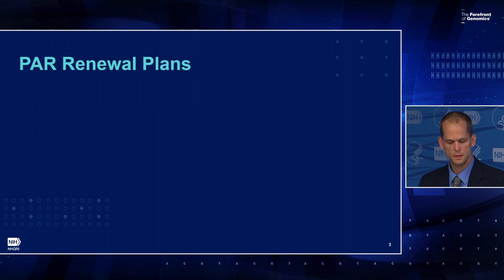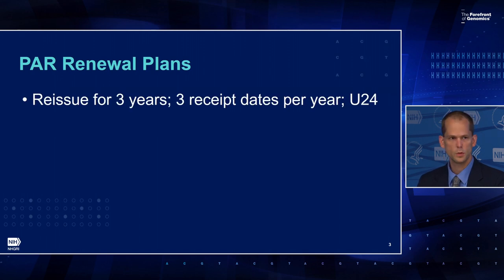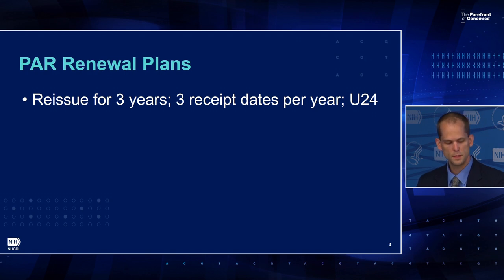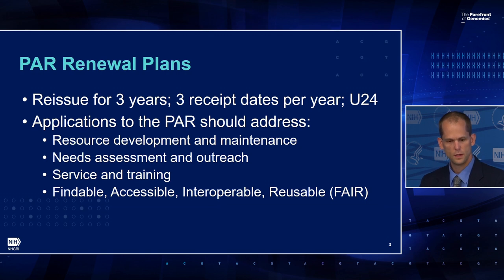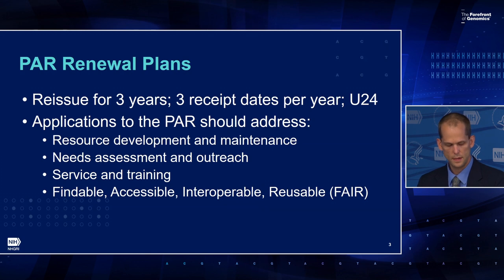To go into the concept itself, this is a renewal of an existing program announcement with special review criteria, or PAR. We are asking to reissue it for a further three years with the standard three receipt dates per year, continuing to use the U24 activity code. Applications responding to it need to address detailed plans to develop and maintain the resource in ways that balance innovation with stability, a thorough needs assessment and plan for community outreach, a strong focus on user service and training, and an emphasis on making data findable, accessible, interoperable, and reusable — or FAIR. With that, I invite any questions and feedback.